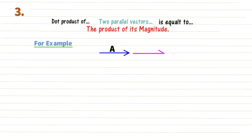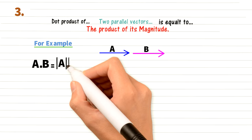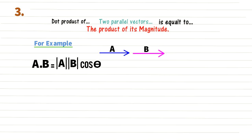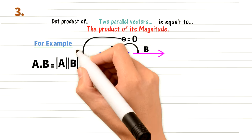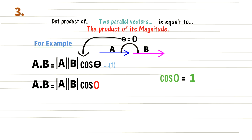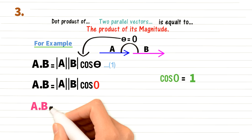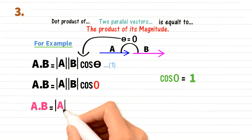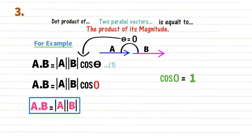For two parallel vectors A and B, the dot product is A·B = |A||B| cos θ. Since the angle between two parallel vectors is 0°, and cos 0° = 1, we get A·B = |A||B|. So the dot product of two parallel vectors equals the product of their magnitudes.